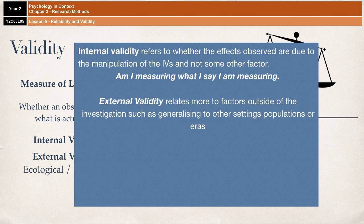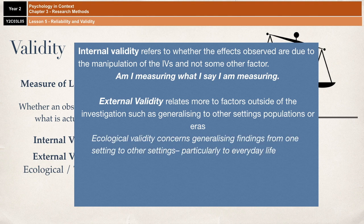External validity relates much more to factors outside of the investigation, such as generalising to other settings, populations and eras or periods of time. Ecological validity, for example, concerns generalising findings from one setting to another setting, particularly to everyday life. Very importantly, it's not about how natural the study is — a more natural setting doesn't mean there's going to be higher ecological validity. It does play a part, but it's actually much more about the realism of the task used to measure the dependent variable.